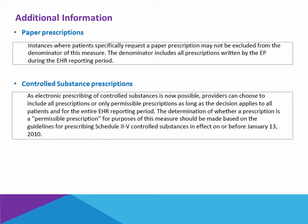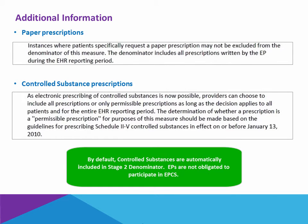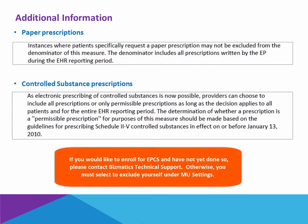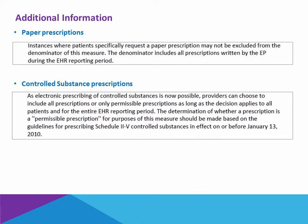With regards to controlled substances: in Stage 1 of Meaningful Use, controlled substances were excluded. Stage 2 permits them, so by default a controlled substance on a prescription will be counted. However, it is optional for a physician to elect to do electronic prescribing of controlled substances, which requires additional implementation — a two-factor authentication process for security validation. If you have not implemented EPCS in your practice, go to MU settings and exempt yourself from controlled substances.